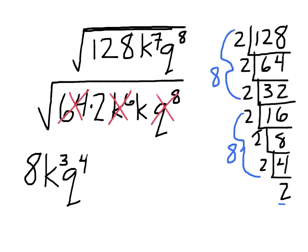What do we have left up there? We have a 2 and a k, right? So those guys will stay like this. The leftovers will stay under the radical. And there's our answer.